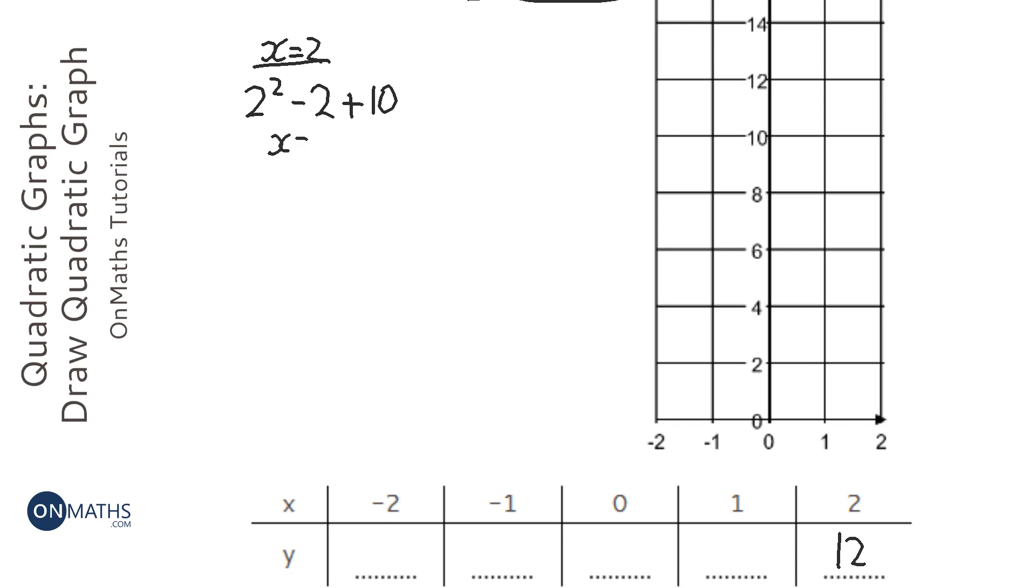We're going to do this for the other one, so when x equals 1, we're going to do 1 squared take away 1 plus 10. 1 squared is 1, so 1 take away 1 is 0, plus 10 is 10.